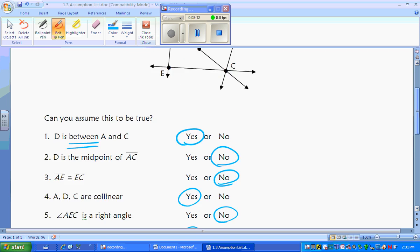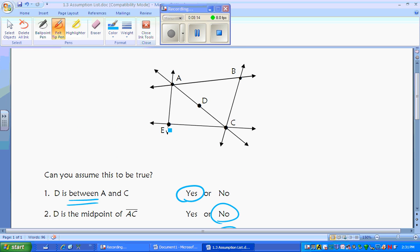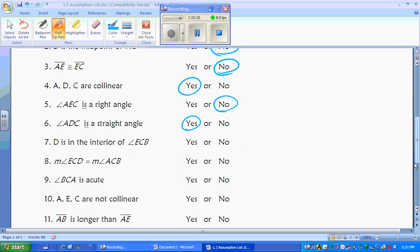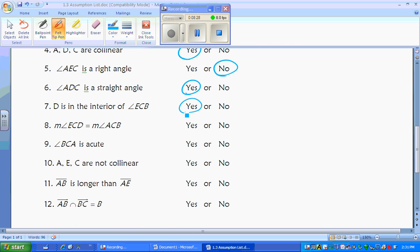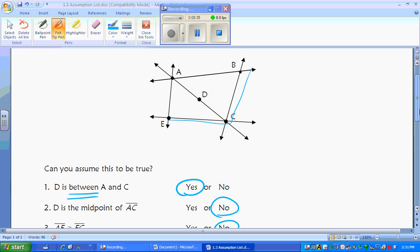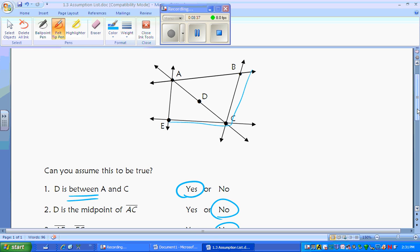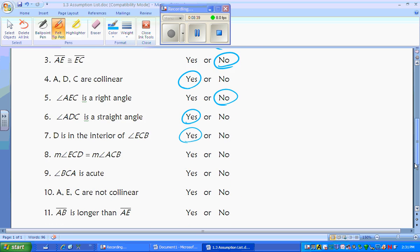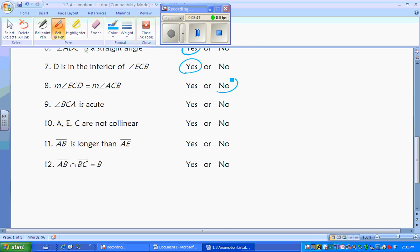D is in the interior of angle ECB. ECB, is D in the middle of that or interior? It doesn't need to be in the middle, it has to be in the interior. Sure, here's the angle we're looking at. It's inside of that angle. So sure, it's interior to that angle. Is the measure of angle ECD equal to ACB? There's no degree measures there, nor anything marked. So we can't assume that those two are congruent.